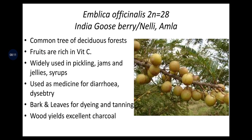Emblica officinalis — Indian gooseberry, nelly, or amla — is a common tree of deciduous forests. Fruits are rich in vitamin C and are widely used in pickling, jam, jelly, syrup etc. Used as medicine for diarrhea and dysentery. Bark and leaves are used for dyeing and tanning purposes. Wood yields excellent charcoal.